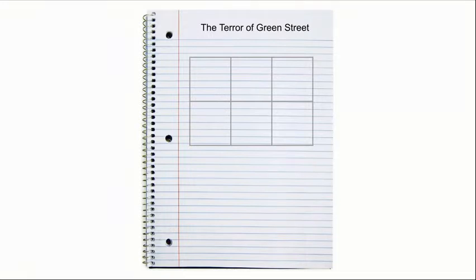To get started, I want you to open your reader's notebook to the next blank page. At the top of the page I want you to write The Terror of Green Street, and then I want you to draw this table or array — two columns, two rows, three columns. This is where we will be recording some new vocabulary. Stop the video now and create this page.